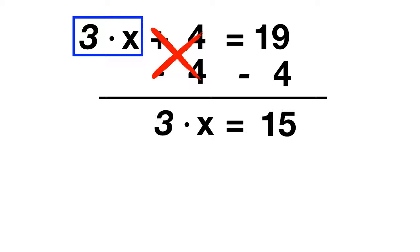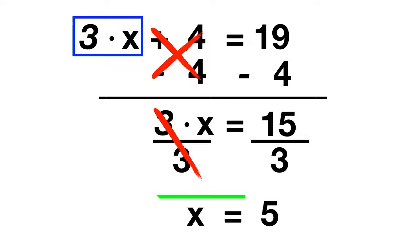You learned that we can cancel multiplication with division. We'll divide by 3. 3 divided by 3 cancels out. Now we have just our x. And on the other side of the equation, 15 divided by 3 will give us our answer. 15 divided by 3 gives us our answer of 5.